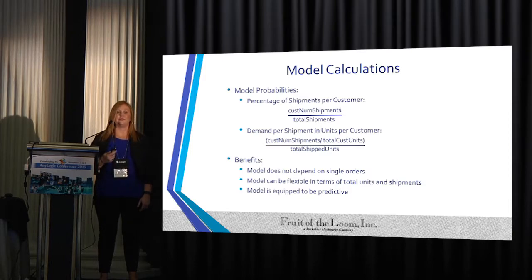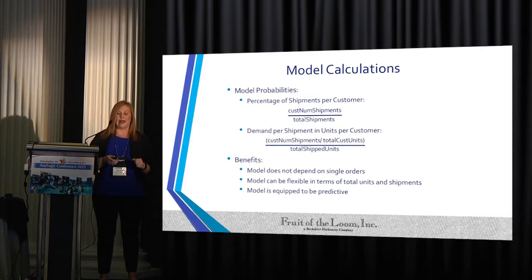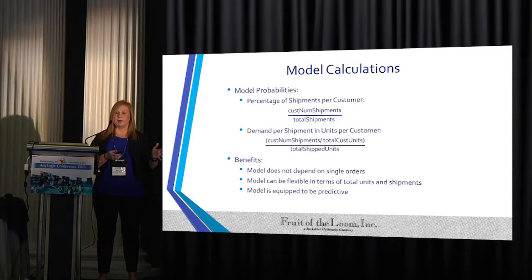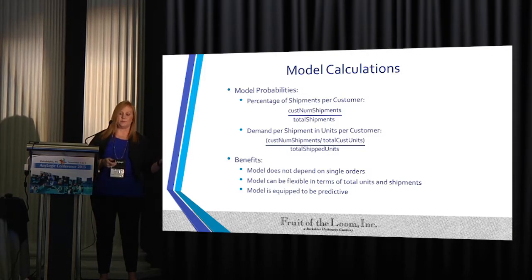For the actual model, we didn't want to input all the different individual orders of a customer. We wanted to look at the percentage of shipments per customer and the demands of those shipments. We looked at demand from last year, but as I'm now in the data science world, I'd really like in the future to put advanced analytics around this to predict customer demand and add that capability into the model.